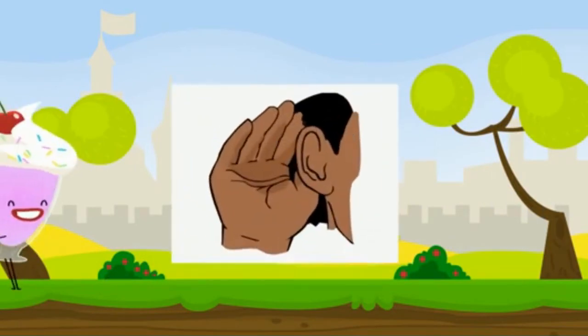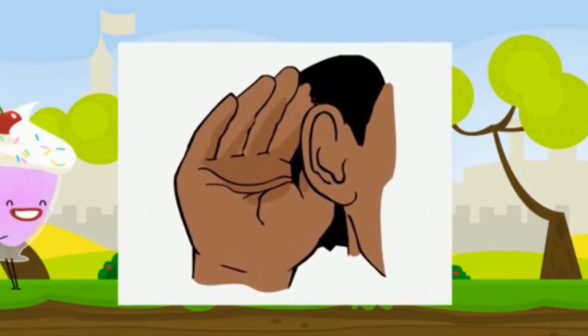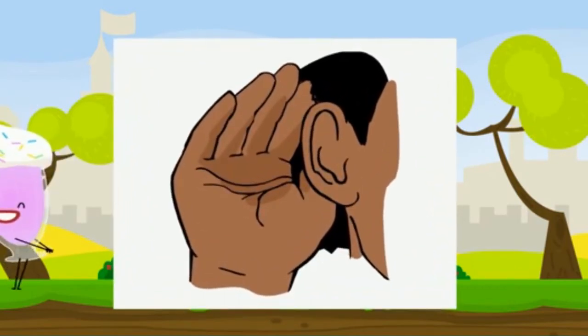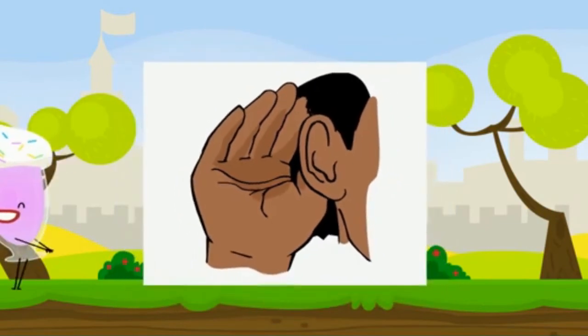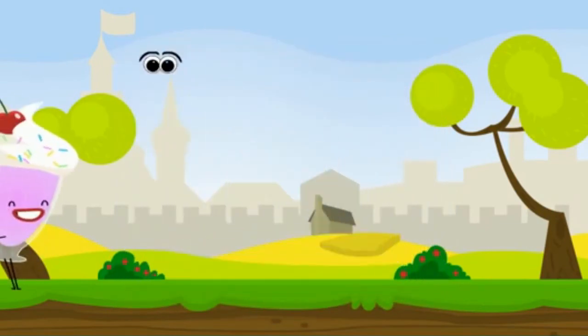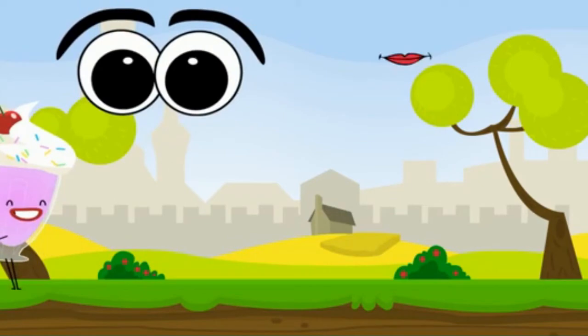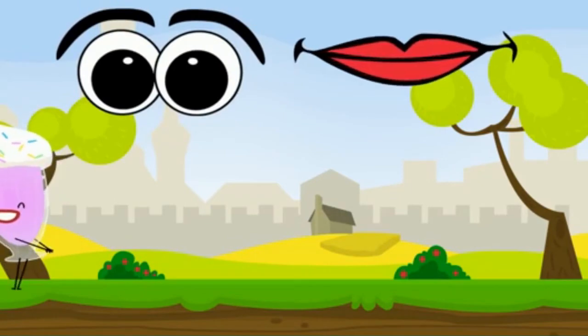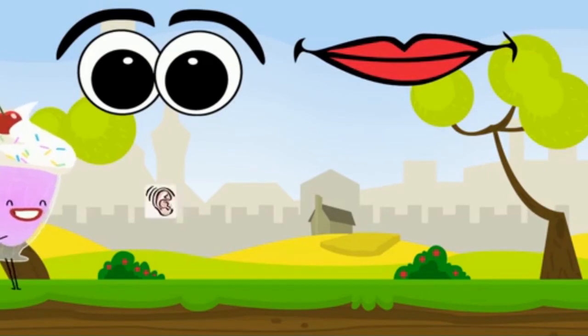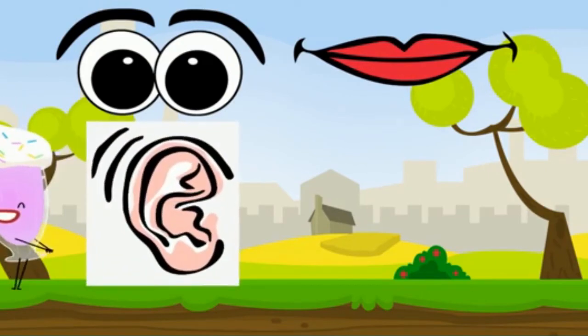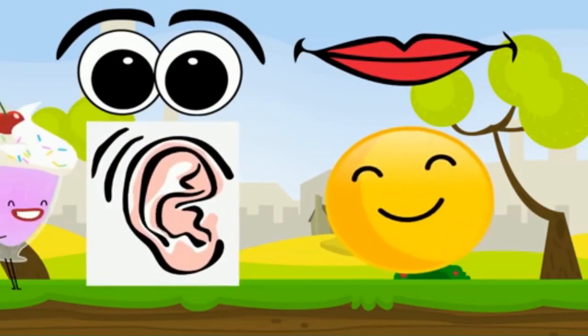Lastly, remember to be an active listener when Sprinkles opens up about his feelings. Being an active listener includes giving eye contact, making sure that you are quiet—so no talking, humming, or making sounds—paying attention to what is being said, and also showing that you care through your facial expressions.